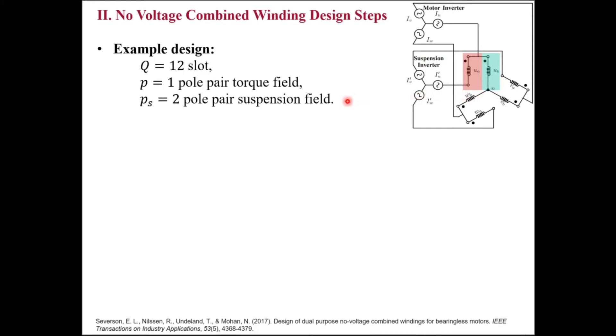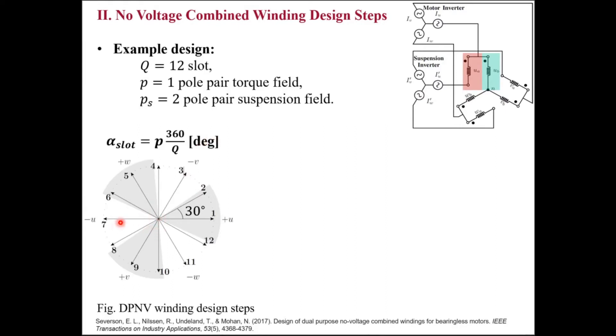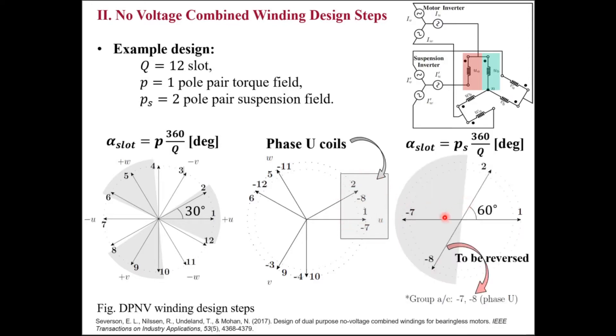For example, the winding design process involves first drawing the star of slots at torque frequency, and then reverse the phasors in the negative zone to determine, for example, phase U coils. Finally, we draw the second plot at suspension frequency to determine which coils belong to the red coil group here. Since this is not the contribution of this paper, we encourage curious readers to read the paper for more information, for example, how to determine the coil pitch.